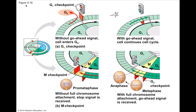When the cell receives the green light at G1, it continues the cell cycle. At the M checkpoint, a cell in mitosis receives a stop signal when any chromosomes are not attached to spindle fibers — important because you want chromosomes splitting equally. The green light is given when all chromosomes are correctly attached to spindle fibers from opposite poles of the cell, allowing the cell to proceed into anaphase. You need everything lined up correctly and all spindles attached correctly before splitting in anaphase.